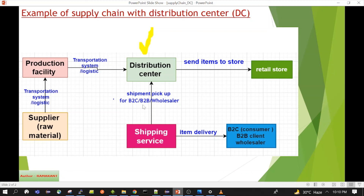This is the simplest example of a supply chain. One point to highlight: depending on how big the business is, the number of distribution centers can vary. One particular business can have more than one — four to five distribution centers. If the business operates across the country, the business team can set up two or more distribution centers. That's all for this session — thanks for watching, see you in the next video.